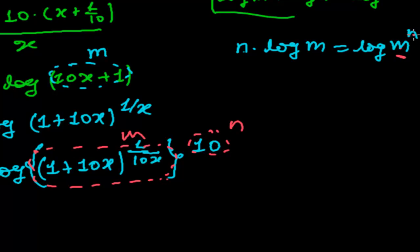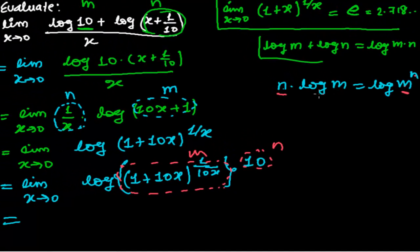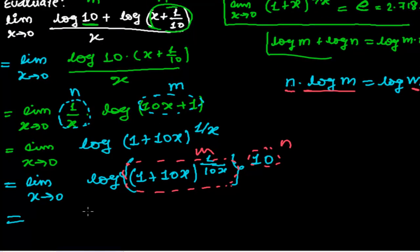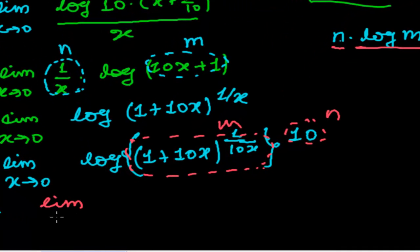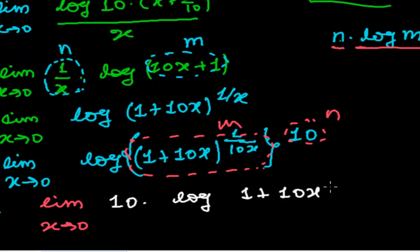So log m to the power n, it will be n times log m. It means limit x to the power 0, n times, n is here 10, times log 1 plus 10x whole to the power 1, 1 upon 10x. Now we exactly got in the standard form.